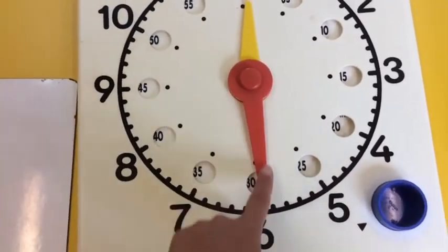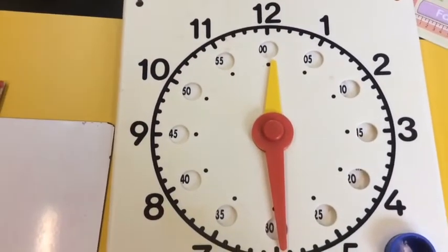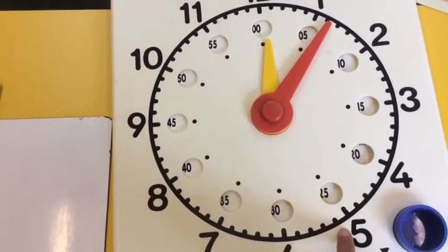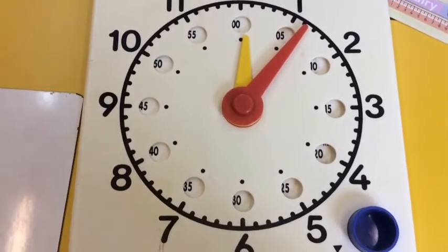So when the minute hand is pointing to 12, 3, 6 and 9, they have a special name. But when it's pointing to 1, 2, 4 and 5, we have to count how many minutes past the hour it's gone.